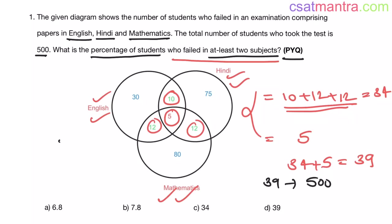Now this 39 is what percent of 500? So 39 by 500 into 100. 100 ones are 10, 5s are 5, 7s are 35 and there is 4 left, so 7.8 is your answer.